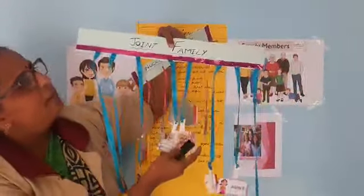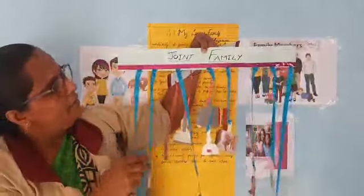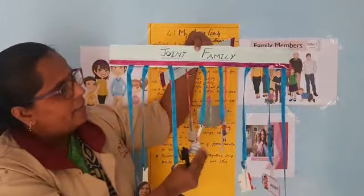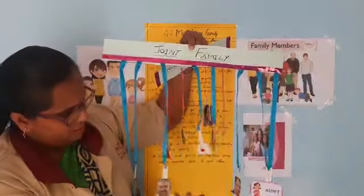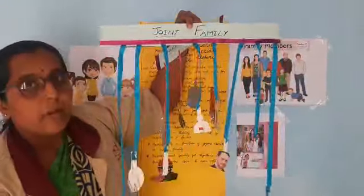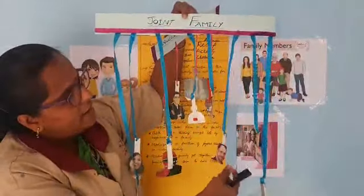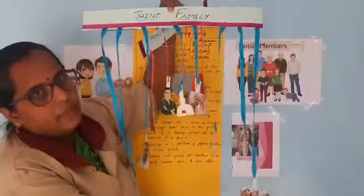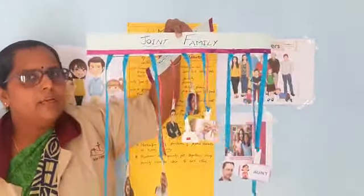I have also made a joint family. This is grandfather, grandmother, father, mother, and a child. Then here we have uncle, aunt, and the cousins. This is a joint family puppets.